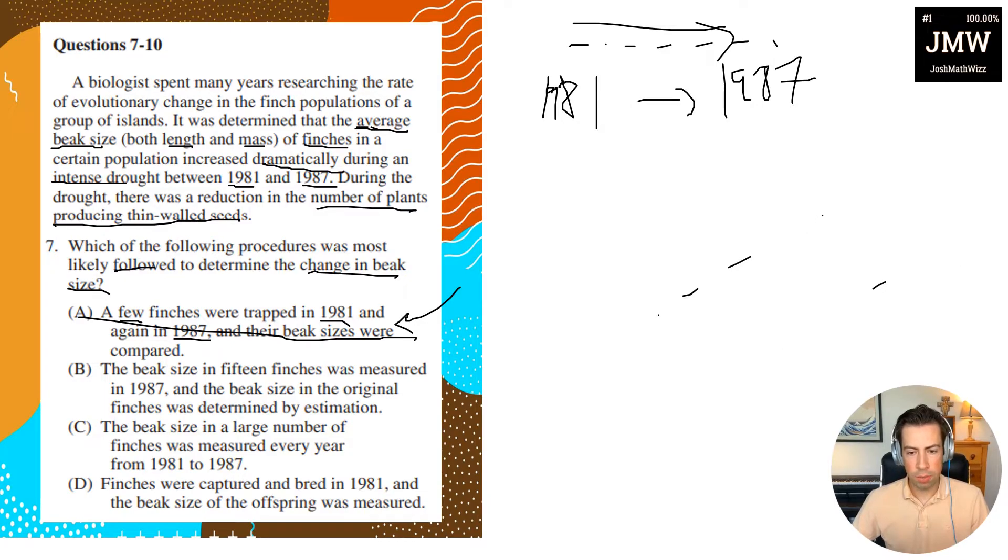Let's look at answer choice B. So answer choice B says the beak size in 15 finches was measured in 1987 and the beak size in the original finches was determined by estimation. Okay, but again, how could you estimate it, right? They're not giving us any function, no formula. Yeah, that one's definitely out. Answer choice C: The beak size in a large number of finches was measured every year from 1981 to 1987. And yeah, this one looks correct because again you have a large sample size and you have multiple data points for multiple years leading up. So you should be able to make like a good extrapolation as to how the beak size changes.